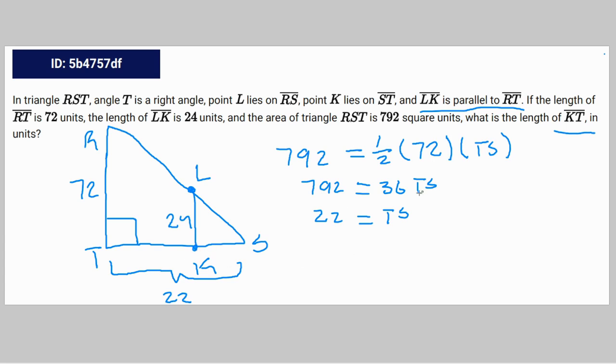We need to find out a ratio between the triangles RTS and LKS. We already see this in the altitude right here, 24 compared to 72. So the ratio between LKS and RTS is going to be 24 over 72, which is one third.